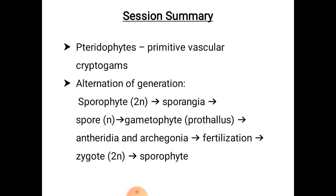Now let us know the summary of this session. Pteridophytes are the primitive vascular cryptogams, and in all pteridophytes we can see alternation of generation — the sporophytic generation gives rise to the gametophytic generation, and this gametophytic generation in turn gives rise to the sporophytic generation.